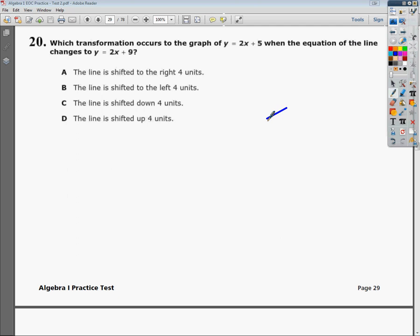Alright, this is Algebra 1 EOC Practice Test 2, question number 20. The question says, which transformation occurs to the graph of y equals 2x plus 5 when the equation of the line changes to y equals 2x plus 9?